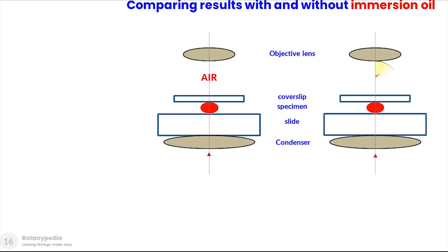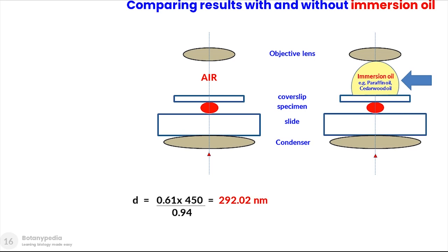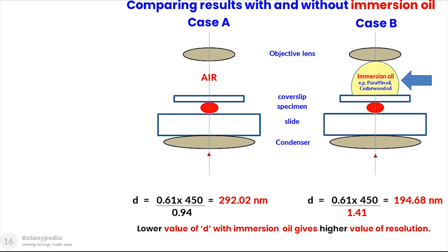Comparing both cases, the limit of resolution changed from 292 to 194 nanometers. We can conclude that to increase the resolution of a microscope, we must choose light with a shorter wavelength, choose a medium with a higher refractive index such as immersion oil, and ensure the numerical aperture n sinθ is as large as possible. The numerical aperture is determined by the companies when designing objective lenses.